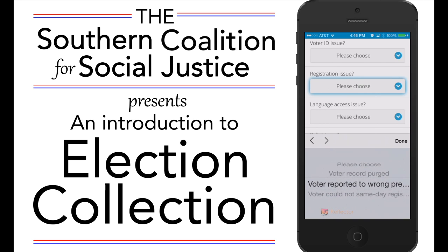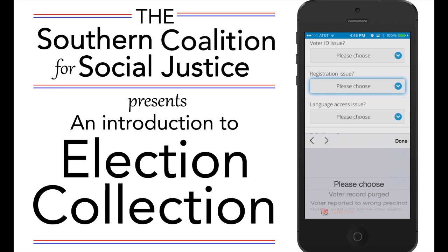Registration issues include purging of records and reporting to the wrong precinct — which is listed a second time, giving you a second option if you were thinking about it as a registration issue versus a polling place issue. For North Carolina, there is also 'could not seem to register.'